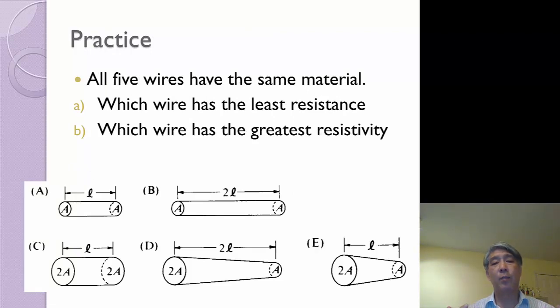Again, here's a practice slide. Any practice slide I want you to do at home. And so here, I have five wires all made of the same material, so they all have the same rho. And out of these five wires, which wire has the least resistance? And part B, which wire has the greatest resistivity? And I want you to come back next class with those answers for me. Thank you.